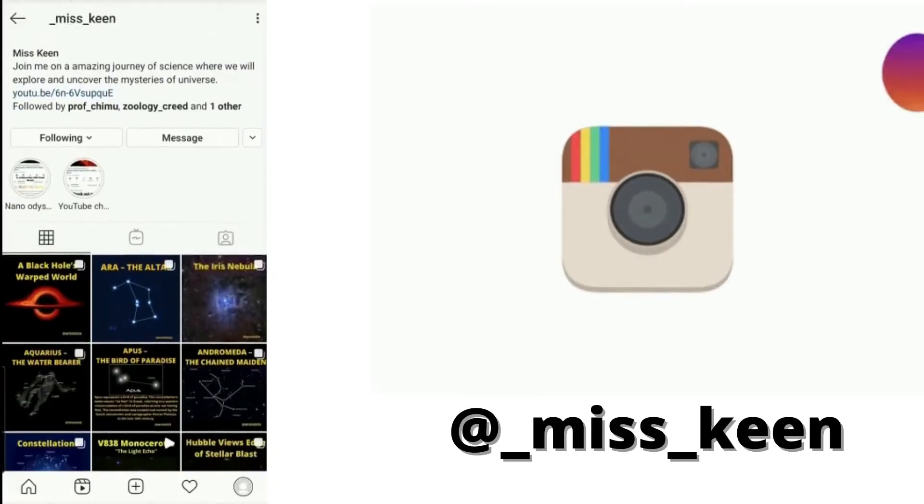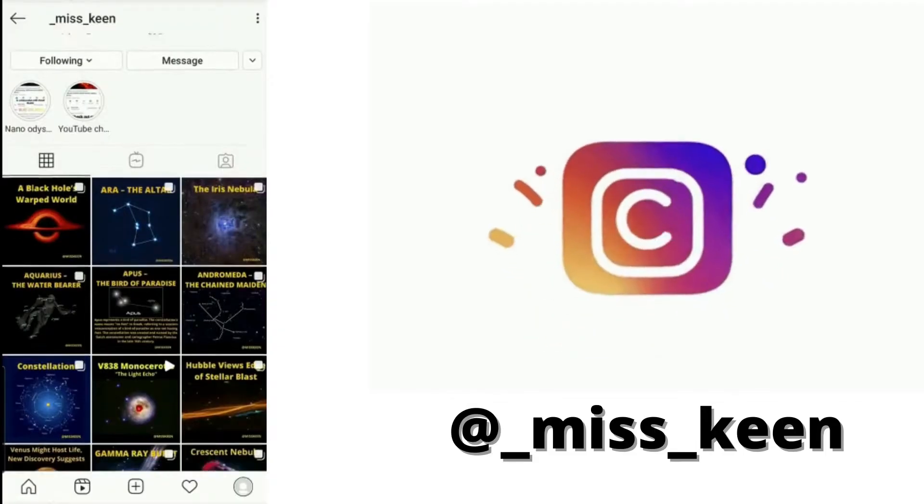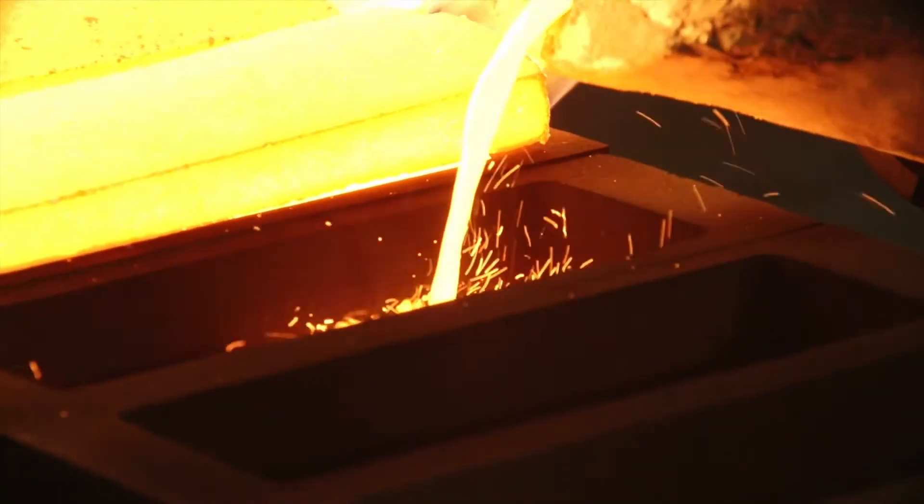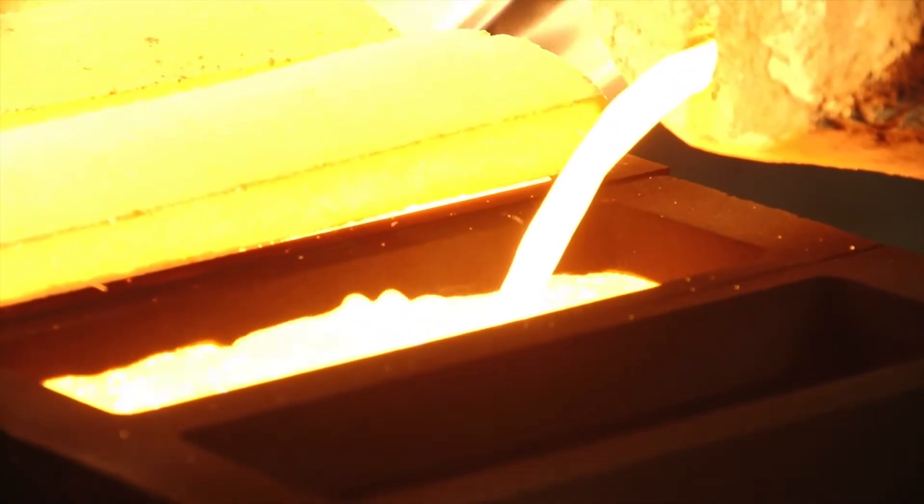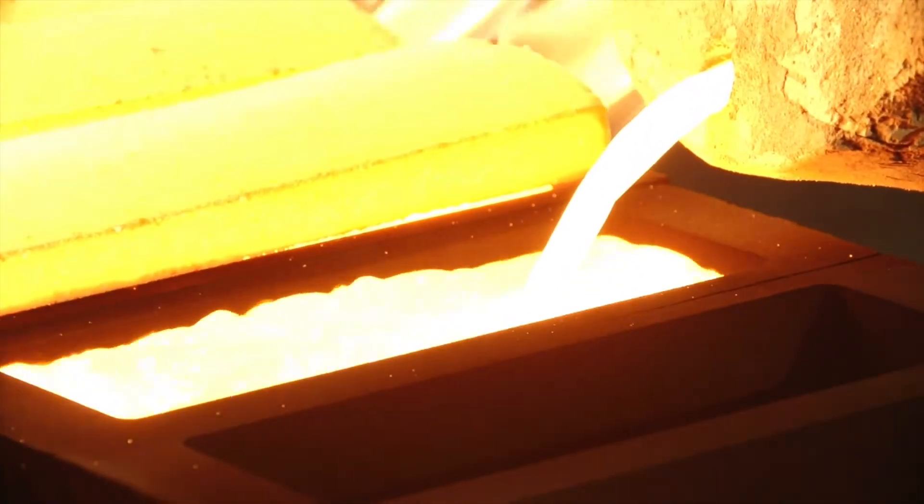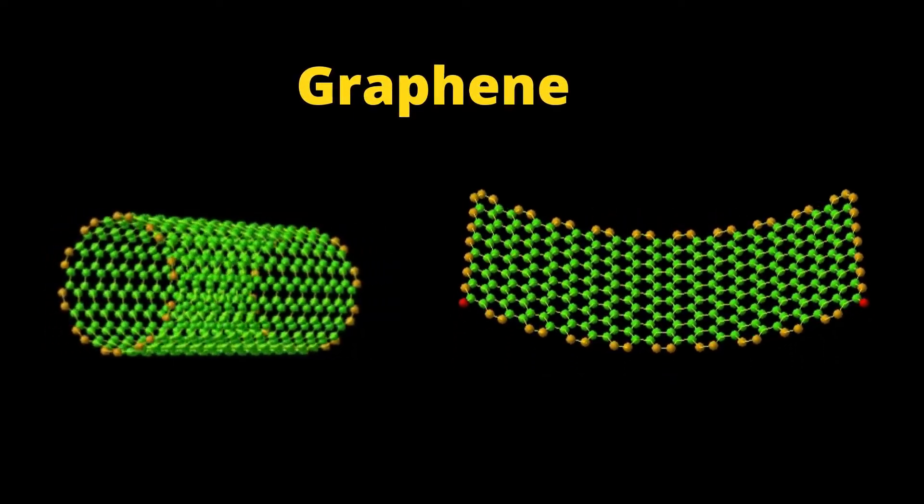We also try to understand why gold is yellow, but a solution of suspended gold nanoparticles can have colors ranging from violet to wine red or white.